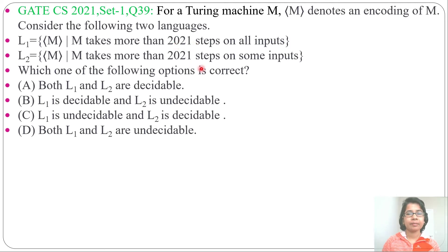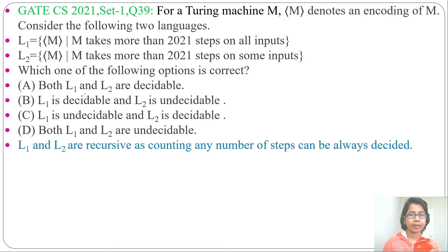Counting the number of steps is always decidable. It will either halt in a final state or a non-final state — it will not go into a loop. So it is always decidable; you can say this is a recursive language. Both L1 and L2 are recursive, as counting any number of steps can always be decided.